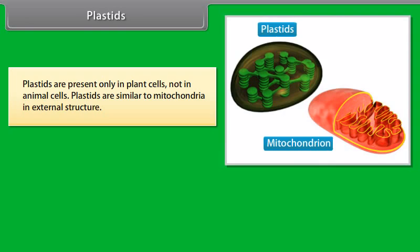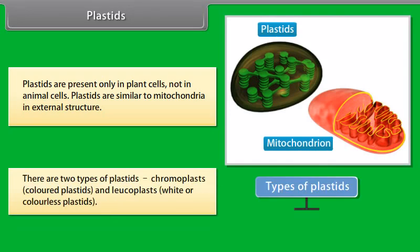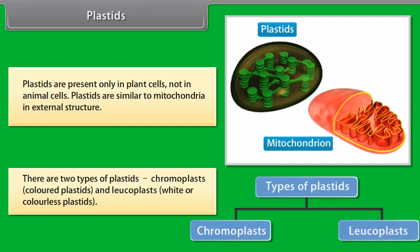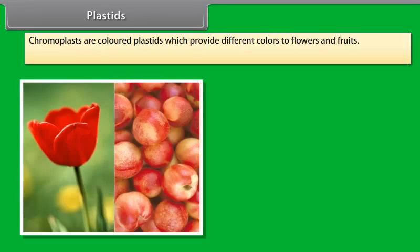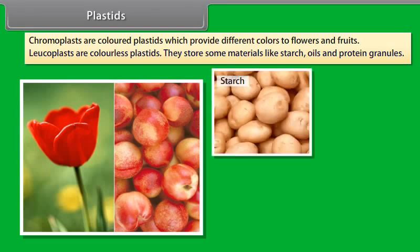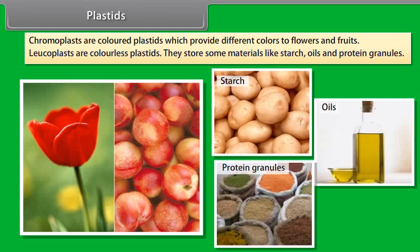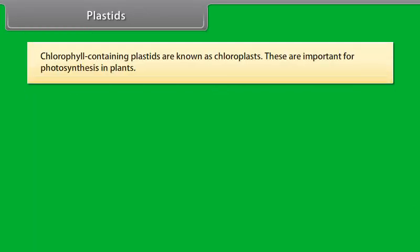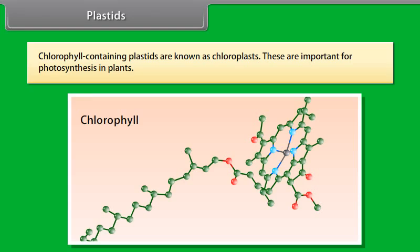Mitochondria are known as the powerhouses of the cell because they generate and provide energy in the form of ATP — adenosine triphosphate — to the cell to perform various chemical activities. ATP is known as the energy currency of the cell. Mitochondria contain two membrane coverings: the outer membrane has many pores on it, while the inner membrane has many folds. These folds are known as cristae.